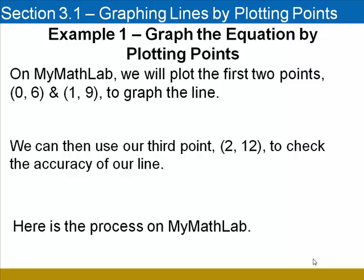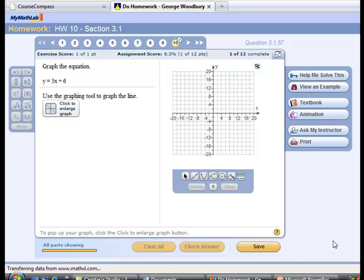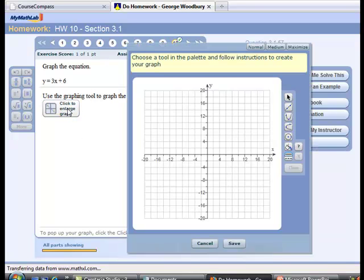Here's the process on MyMathLab. OK, here we go. Here's our example, y equals 3x plus 6. And I'm going to begin by enlarging the graph, clicking this button here. My first ordered pair was 0, 6. To put that on the graph, I'm going to click the line tool.